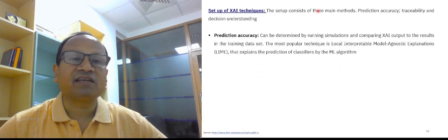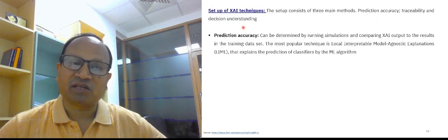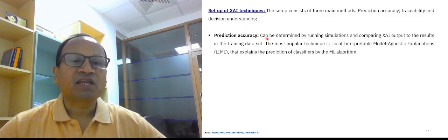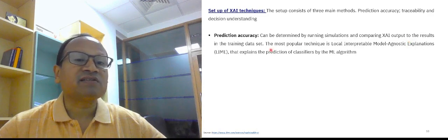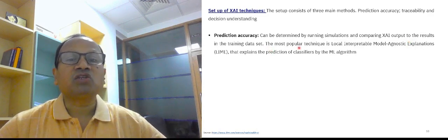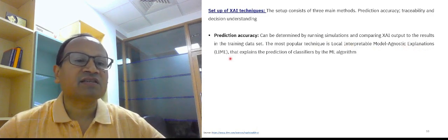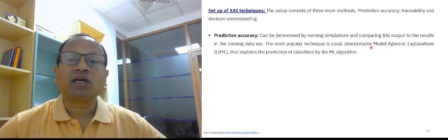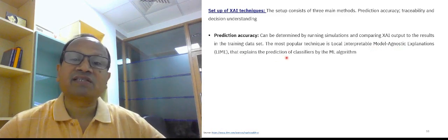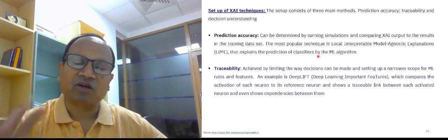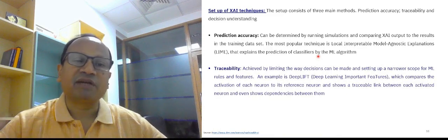How do you set up the techniques? The setup consists of three main methods. Prediction accuracy, traceability, and decision making. Prediction accuracy can be determined by running simulations and comparing output to the results in training data set. The most popular technique is local interpretable model agnostic explainable, called as LIME. Local interpretable model agnostic explanations. This explains the prediction of classifiers by the ML model. Why explanation is needed? Because we want to make AI as explainable AI.